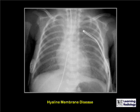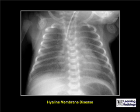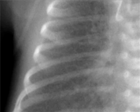This is an example of hyaline membrane disease. You can see there is a granular ground glass appearance to the lung. This is another example with a slightly coarser appearance, but there is still a granularity to it and an overall ground glass appearance.